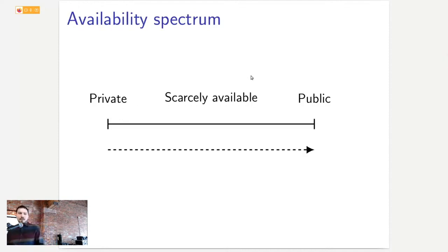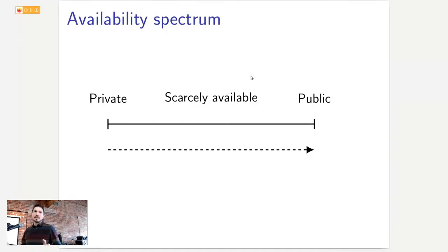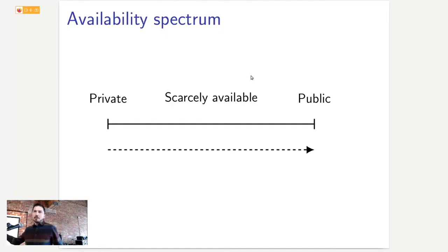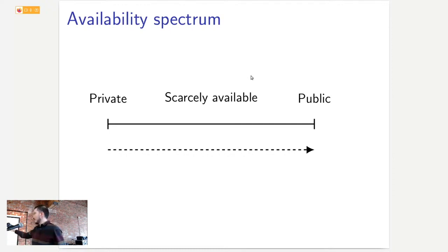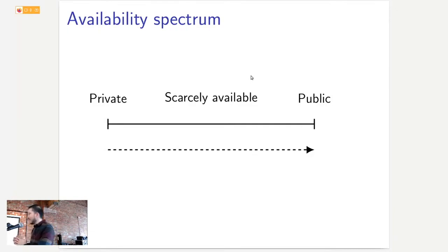Data can be private — where only the data owner knows about it — or public, where everyone knows about it, like blockchain data, which is impossible to monetize. The sweet spot for monetization is scarce availability. The spectrum only goes rightward: you can make private data scarce available, or scarce available data public, but not the reverse. This implies that whenever you're using useful Oracle data, it was at some point private, meaning you must trust the data owner with data integrity.